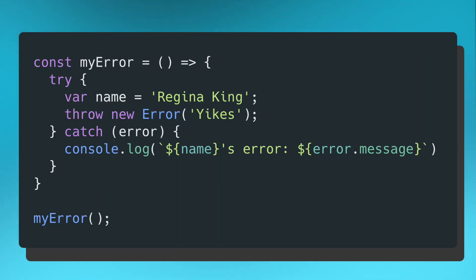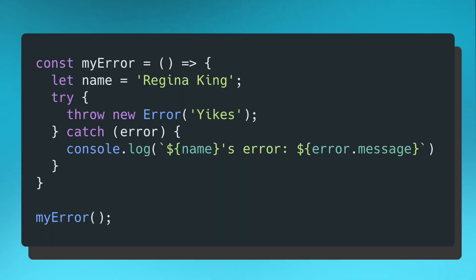Let's look at another example where I throw an error. Inside my function, I have a try/catch block. Inside the try block, I create a var variable called name set to Regina King, and then immediately throw a new error. Because var variables are accessible at the function level rather than the block level, I'm able to access name inside the catch block — which some consider a win, but it's very confusing to read. You shouldn't have access to a variable defined in a different block scope. Instead of using var to share a variable across try and catch, just create a let variable and define it outside your try/catch blocks so both blocks have access to that top-level let variable.